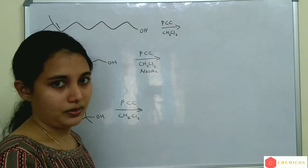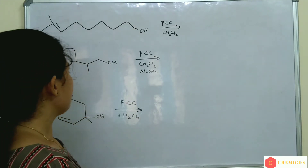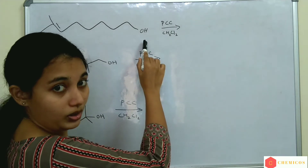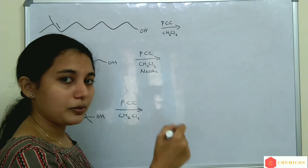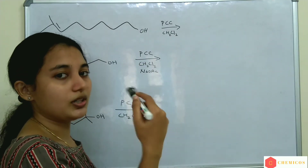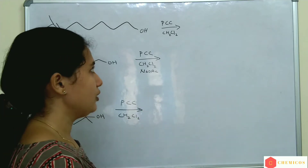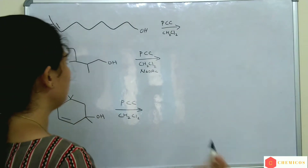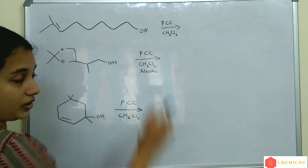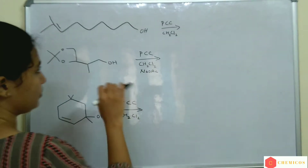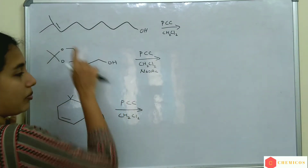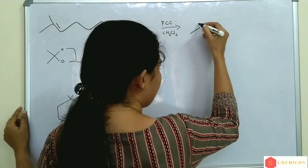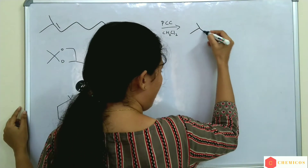Let's move on to some examples. This is an alcohol — which type? A primary alcohol. A primary alcohol is converted to an aldehyde with PCC. So this OH is converted to CHO. And this double bond is not affected in this reaction — other functional groups are not affected.